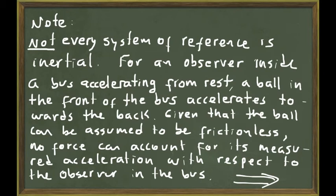Please note that not every system of reference is inertial. For an observer inside a bus accelerating from rest, a ball in the front of the bus accelerates towards the back. Given that the ball can be assumed to be frictionless since it can roll, then no force can account for its measured acceleration with respect to the observer in the bus. Let me show you this with an animation that I made.